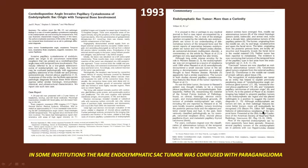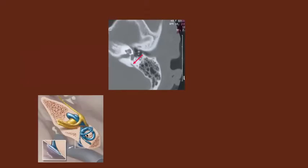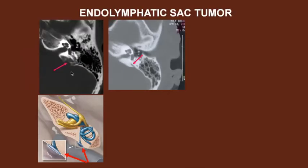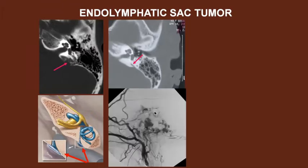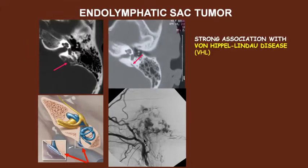In some institutions, the rare endolymphatic sac tumor was confused with paraganglioma, prompting a case report in 1993 in AJNR. The endolymphatic sac tumor has its epicenter along the posterior petrous pyramid in the region of the vestibular aqueduct and results in bone destruction in this location. Angiographically, these lesions are also associated with an intense blush, and there is a strong association with von Hippel-Lindau disease.